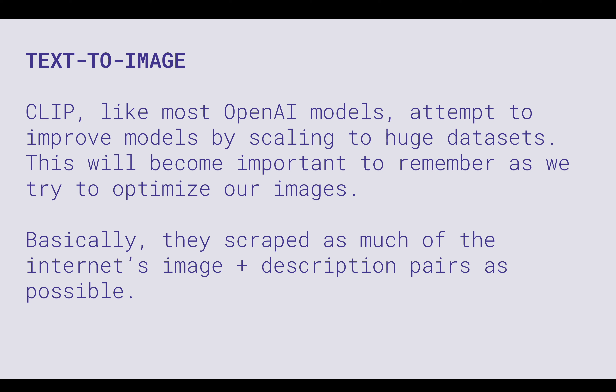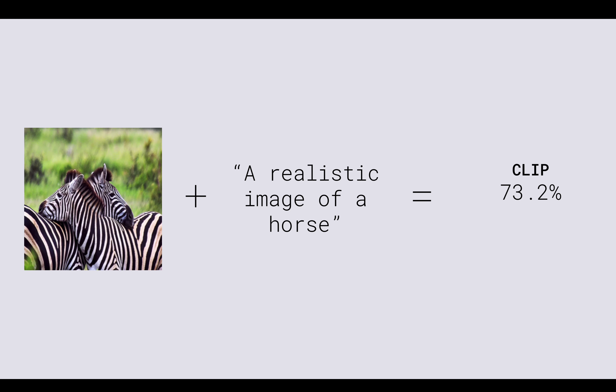CLIP was trained by scraping a huge amount of the internet, particularly image and description pairs — alt tags on HTML, actual captions from Flickr, Instagram, weather websites. OpenAI converted all of this into image-description datasets. They're not really telling you what they scraped, and that becomes important as we look at some hacks. There is also a lot of racist imagery inside CLIP models because they scraped sites like Reddit, 4chan, or 8chan where racist content exists.